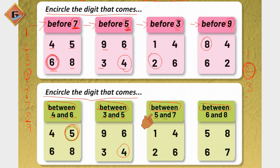After that, we have five and seven. Between five and seven, what comes? We have number five and number seven, and between them comes number six, so we encircle number six. Next, six and eight — between six and eight comes seven, so we circle seven like this. Our 'between' concept is also clear now.